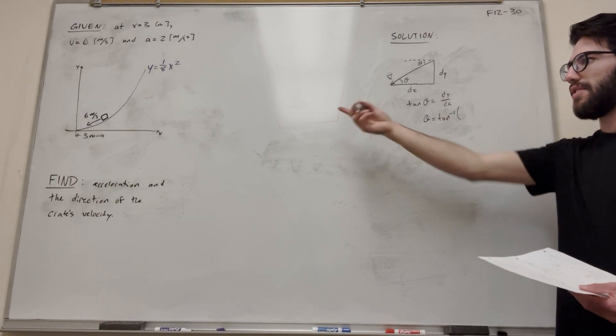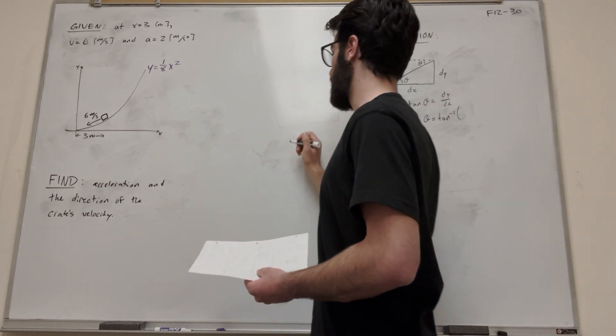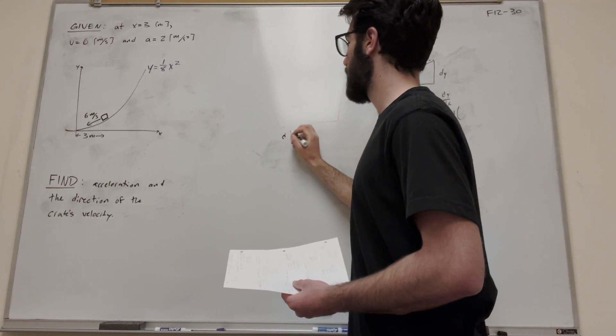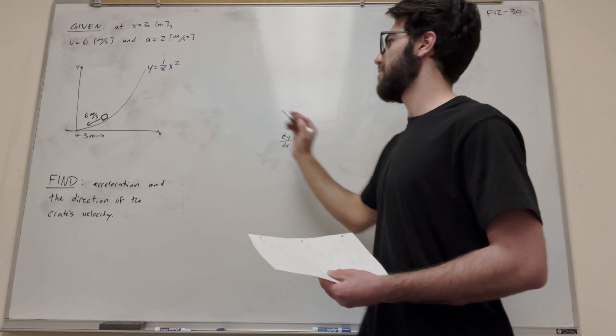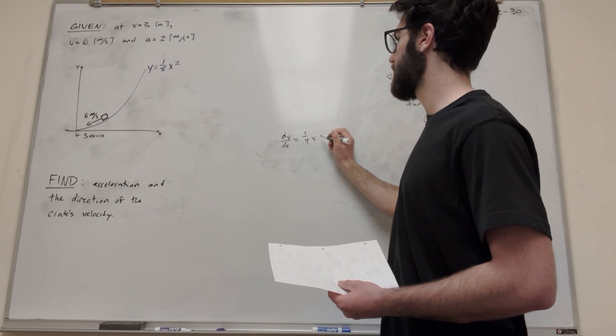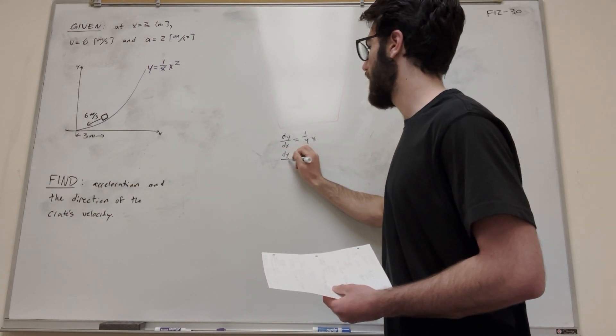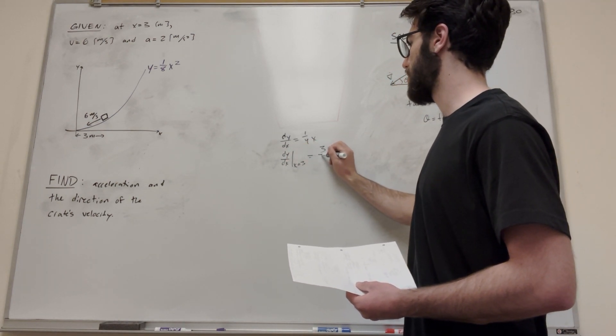So let's go ahead and find dy dx. So dy dx is just the derivative. So let's bring that 2 down. So it's going to be 2 over 8 or 1 over 4 x. And if we find dy dx at x equals 3, we're just going to plug in a 3, we're going to get 3 over 4.